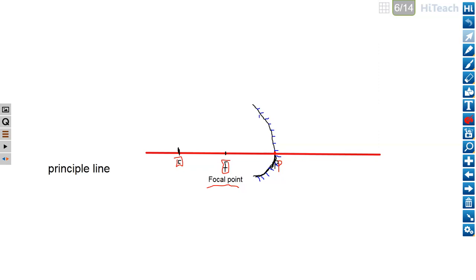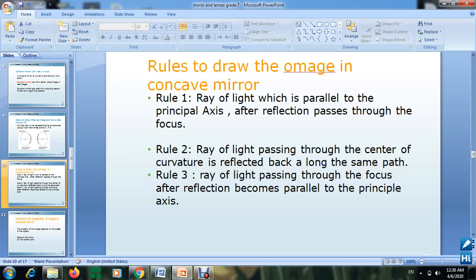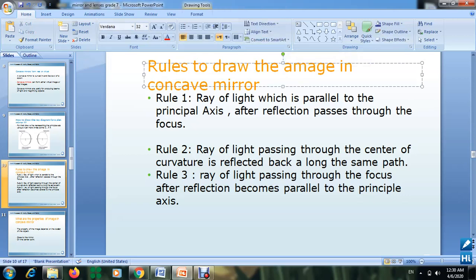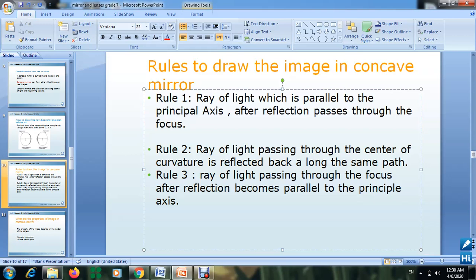To understand how to draw the image: in the plane mirror we needed only two rays, but for concave mirrors we want to study three rules. In each case we only need two of these rays. Let's start with the rules for drawing the image in a concave mirror.